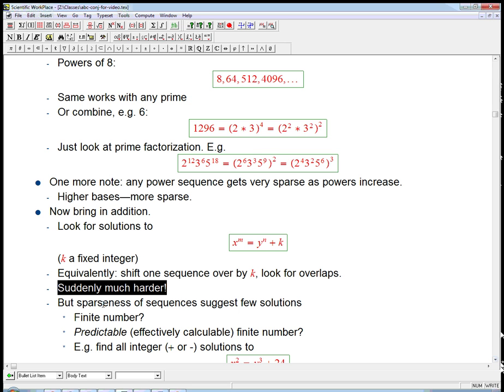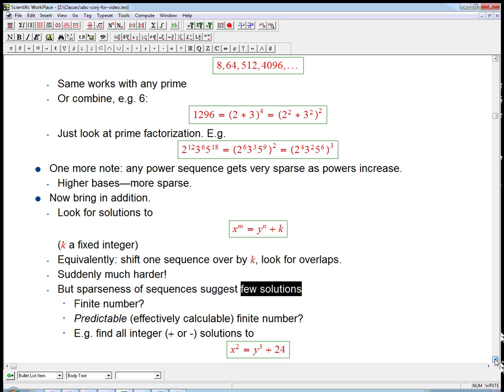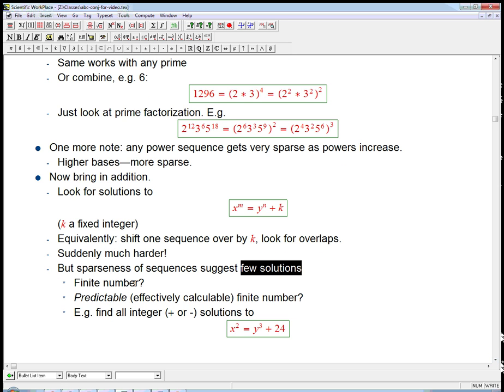So suddenly it's a much harder and more interesting problem. So as I said, the sparseness of the sequences, you're taking two sequences that are very sparse, and they might have accidental overlaps, but the suggestion from that, it's a very rough suggestion, is that maybe there's only going to be a few solutions. And a few, of course, there's various interpretations of that. Maybe it's an infinite number of solutions, but they're very, very, very, very sparse.